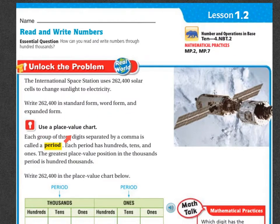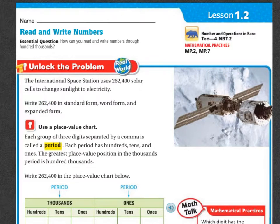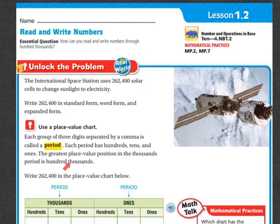We're going to use a place value chart. Each group of three digits is separated by a comma, which is called a period. So there's my comma — that's one period and that's a second period. Each period has hundreds, tens, and ones. The greatest place value position in the thousands period is the hundred thousands.